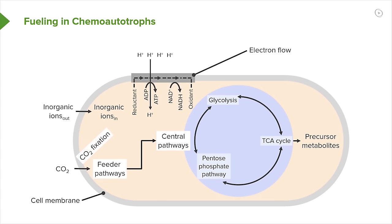The chemoautotrophs can take inorganic ions and import them into the cell and use them to make energy by an electron flow in the membrane of the cell. They can also take carbon dioxide and feed that into these central metabolic pathways to make all of the precursor metabolites that they need — all the chemicals that will go on to make amino acids, lipids, and so forth. These bacteria can synthesize it all. It's quite remarkable.